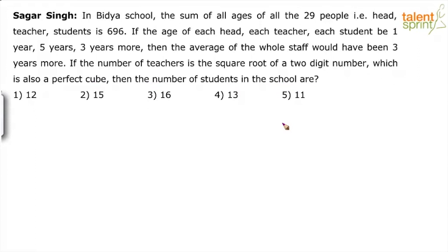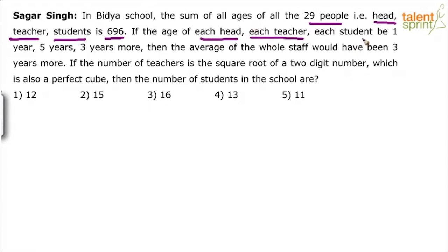So basically, there is a school where the sum of the ages of all 29 people — which includes heads, teachers and students — is 696. The total age of all these people is 696. If the age of each head (headmaster), each teacher and each student be 1 year, 5 years and 3 years more, then the average of the whole staff would have been 3 years more.